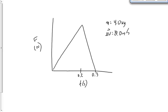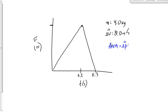Now look at this new problem. We see a force versus time graph. This time we're given the mass and the change in velocity. The question asks: what's the maximum force applied to this object? Notice there are no numbers on the y-axis — we're looking for that maximum force, the height of the triangle. We know it will be area equals impulse, one-half base times height, with a base of 0.3 seconds.